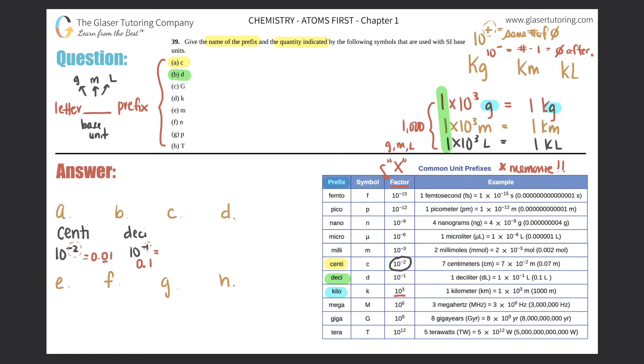Capital G is giga. Giga is 10⁹. If I had to write all these out, it would literally be nine zeros: 1, 2, 3, 4, 5, 6, 7, 8, 9. This is like one billion, so giga is basically a billion.